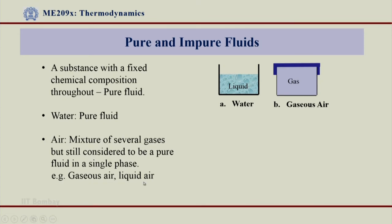For example, gaseous air or liquid air. Air is a mixture of various gases — oxygen, nitrogen, helium, carbon dioxide, water vapour, hydrogen in small percentages. Even though it is a mixture of several gases, we still identify it as a pure fluid when it is in a single phase. Gaseous air is a pure fluid; liquid air is also a pure fluid.